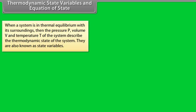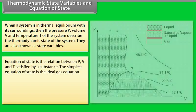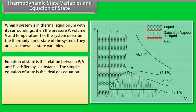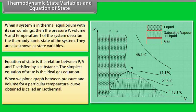Thermodynamic state variables and equation of state. When a system is in thermal equilibrium, the pressure P, volume V, and temperature T describe the thermodynamic state of the system. They are also known as state variables. The equation of state is the relation between P, V, and T satisfied by a substance. The simplest equation of state is the ideal gas equation. A graph between pressure and volume at a particular temperature gives a curve called an isothermal. A plot of different isothermals for CO₂ is shown.